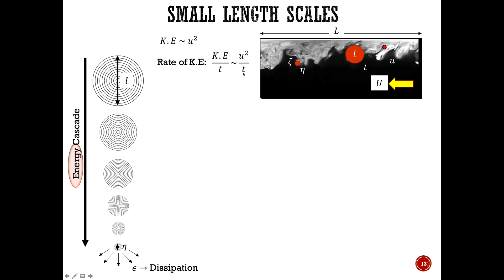At the largest length scales, you can write the time as L over U — since velocity is distance over time, time is just length divided by velocity. Simplifying that, you get an expression: U cubed over L. So the rate at which kinetic energy changes is proportional to the cube of the fluctuating velocity divided by the largest length scale.